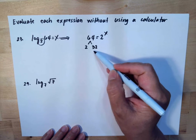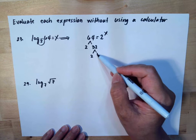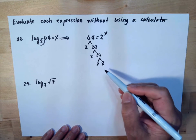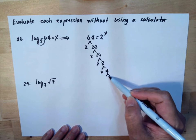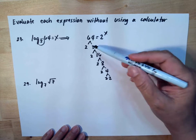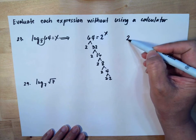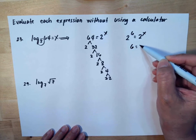Divide 64 by 2 is 32, divide 32 by 2 is 16, divide 16 by 2 is 8, divide 8 by 2 is 4, and 4 is 2 and 2. So we have 1, 2, 3, 4, 5, 6, so this will be 2 to the 6 equals 2 to the x, meaning 6 equals x.